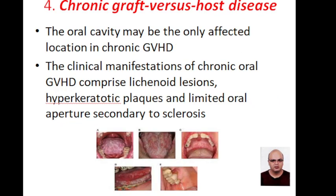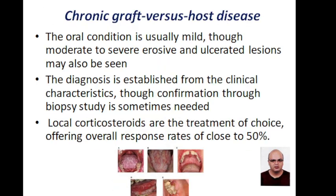Graft-versus-host disease affects the oral cavity in the form of lichenoid lesions, hyperkeratotic plaques, and limited oral aperture secondary to sclerosis. The oral condition is usually mild, though moderate to severe erosive and ulcerated lesions are seen. Diagnosis is established from clinical characteristics, and confirmation through biopsy is needed. Local corticosteroids are the treatment of choice, and overall response rates are close to 50%.